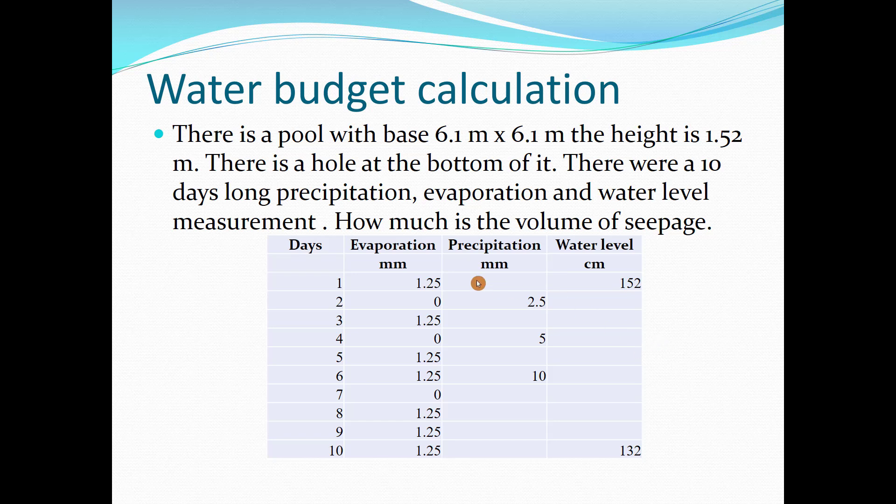Hi friends, we have this example. We have a pool with the base area 6.1 meters by 6.1 meters and the height of that pool is 1.52 meters. We have a hole at the bottom of the pool. Within 10 days, we have data for precipitation and evaporation.